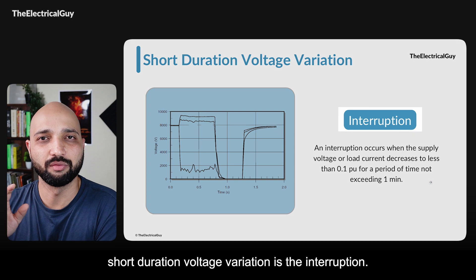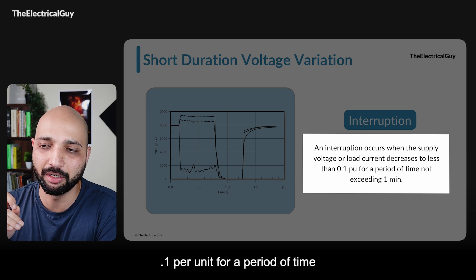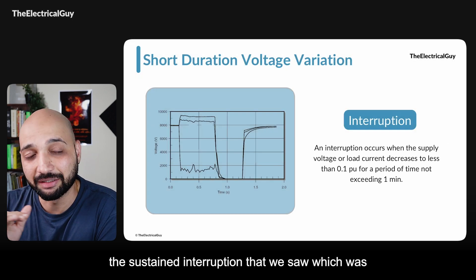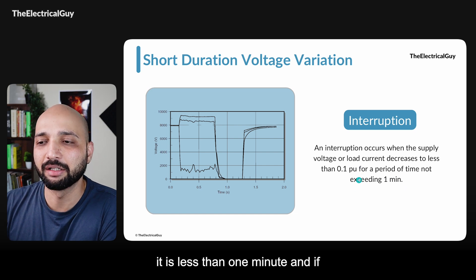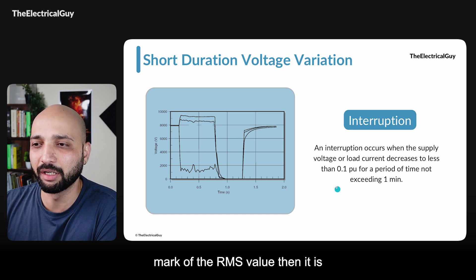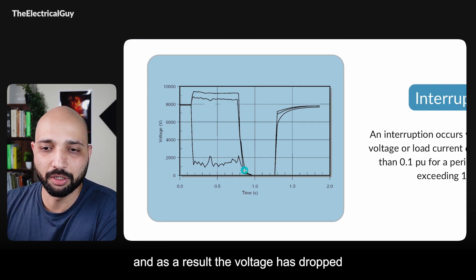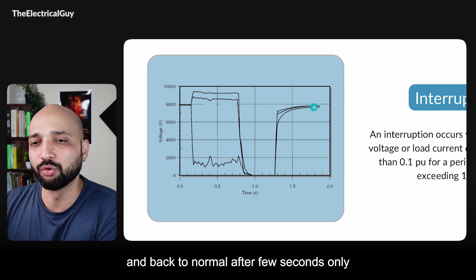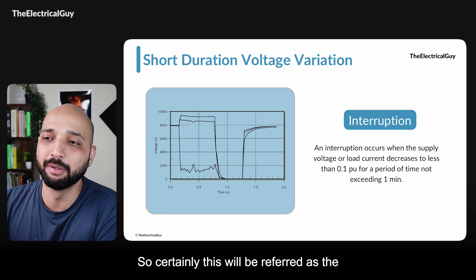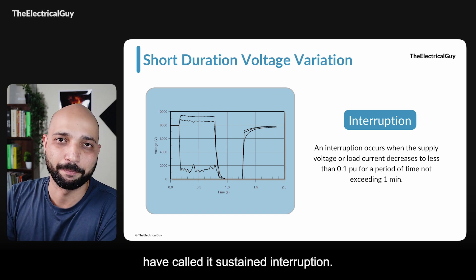The third category in short duration voltage variation is interruption. An interruption occurs when the supply voltage or load current decreases to less than 0.1 per unit for a period not exceeding one minute. This is exactly opposite to sustained interruption, which was more than one minute — here it is less than one minute, and if the voltage falls below the 10 percent mark of the RMS value it is called an interruption. The example shows an issue in one phase causing voltage to drop to a low value but then it raised back to normal after a few seconds, less than one minute — so it is referred to as interruption, not sustained interruption.